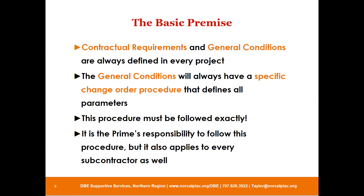The basic premise for any construction contract is always the same. The contractual requirements and general conditions are always defined in every project and spelled out in the bid documents. More specifically, they will have a change order procedure that is explicit and covers every possible contingency and scenario. That procedure has to be followed exactly — both by the owner's rep and the contractor. It's always the prime's responsibility to follow the procedure, but it absolutely applies to every subcontractor as well.